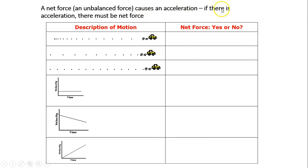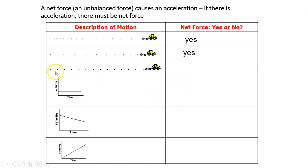A net force causes acceleration; if there is acceleration, there must be a net force. Looking at ticker tape diagrams: the first indicates acceleration, so yes, there is a net force. The second shows the object slowing down — speed is changing — so there is a net force. The third shows constant speed, no direction change, so velocity is constant, acceleration is zero, and there is no net force.